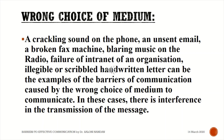The second barrier to communication is wrong choice of medium. A crackling sound on the phone, an unsent email, a broken fax machine, blaring music on the radio, failure of internet of an organization, or an illegible scribbled handwritten letter can be examples of the barrier of communication caused by the wrong choice of medium. In these cases there is interference in the transmission of the message.